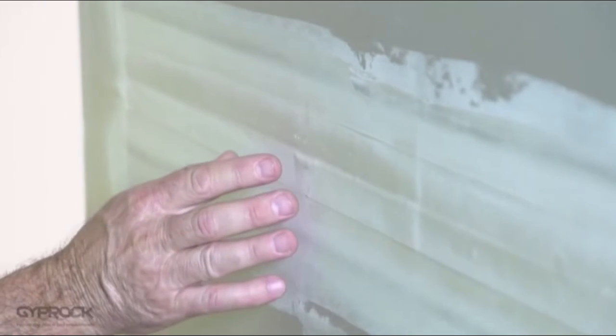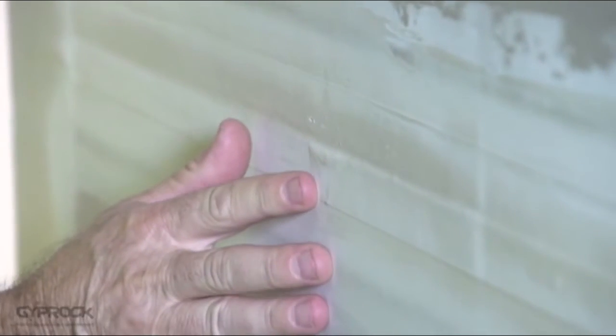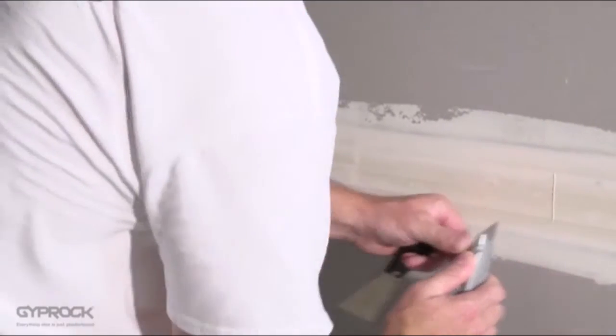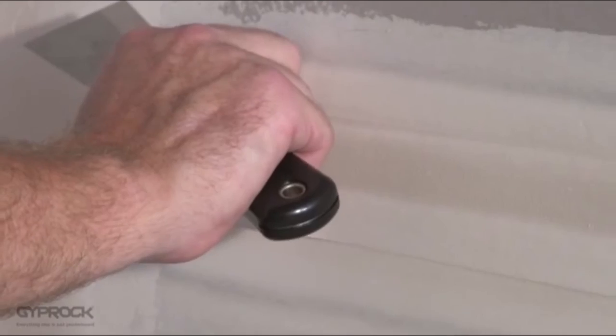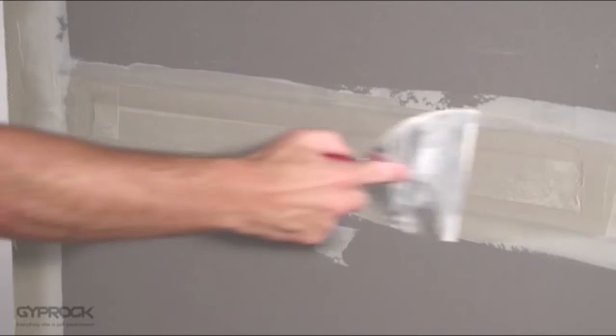If you come across any tape that's loose or has air bubbles under it, you'll need to remove that section and reset it. Cut through the tape at each end of the section, and gently pull the tape and compound away from the board. Then repeat the complete three coat jointing process. We covered that in video four.